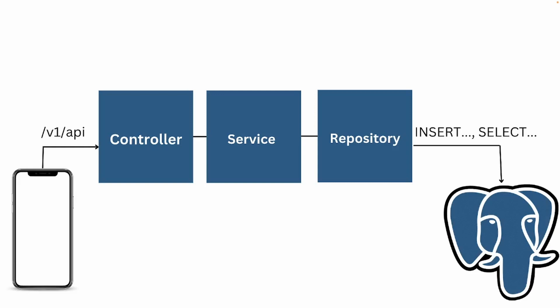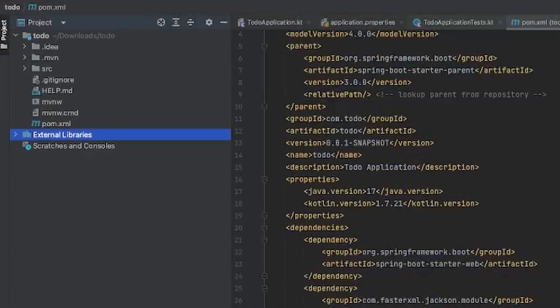With the service, we define our logic to validate information retrieved by the request — whether it's valid for creating a to-do, or whether they have the proper info to delete something. Once everything flows through the service and repository, the controller sends a response back to whoever made the request, whether that's someone on a phone or a computer. This is the overall request-response flow we're going to follow.